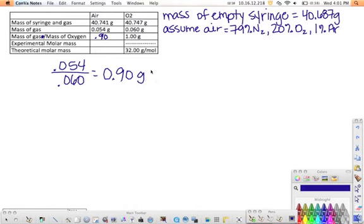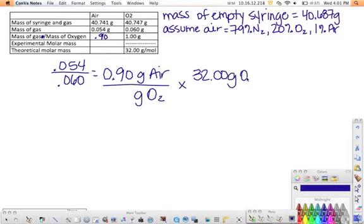The mole fraction is just simply grams of air to grams of O2, and we are going to multiply that by 32.00 grams of O2 per one mole. So my grams are going to cancel, and I'm going to be left with grams of air per mole, which is molar mass. So you take 0.9, multiply it by 32, and in correct sig figs you get 29 grams per mole.